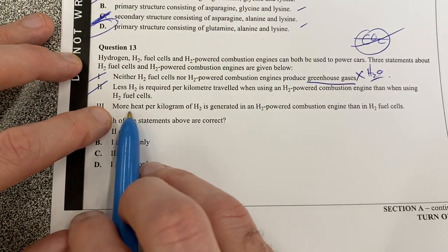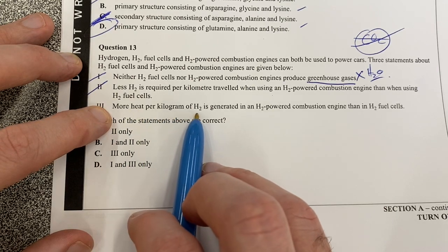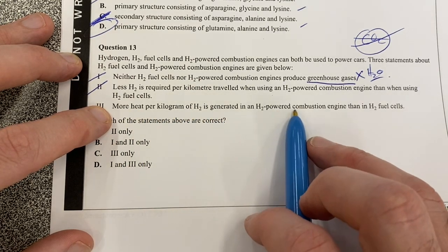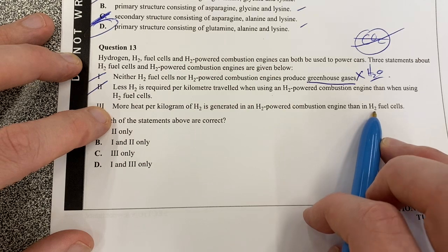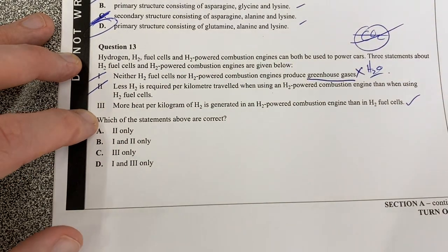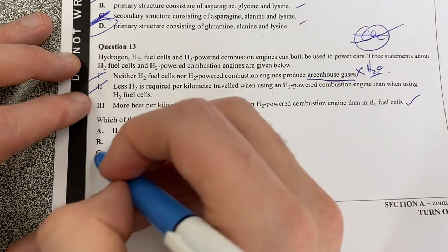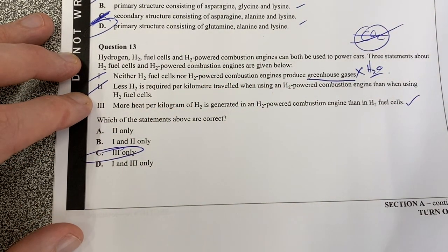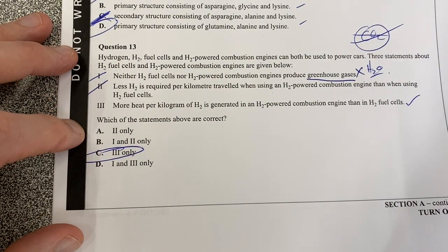I think more heat per H2 is generated in a combustion engine than a fuel cell that kind of makes more sense to me because in a fuel cell you're going to end up with electrical energy so it's going to be C which should be the answer to question 13.